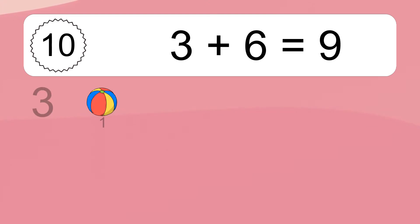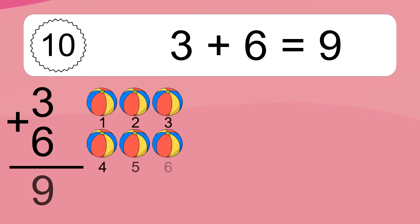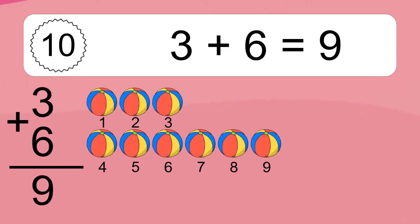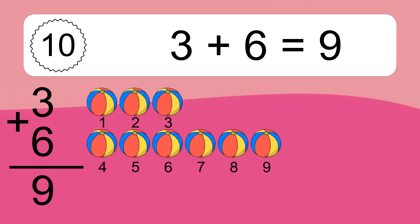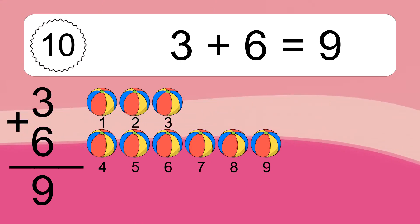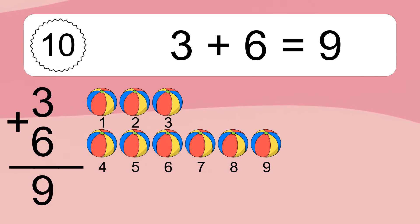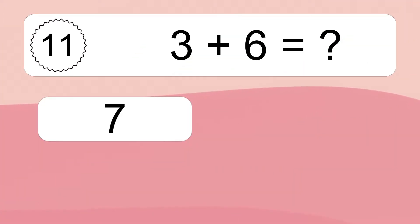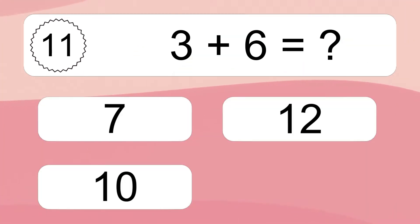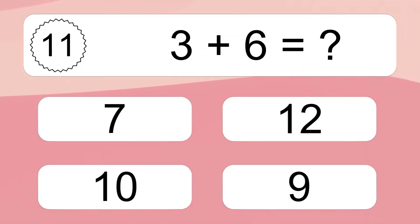3 plus 6 equals what? 3 plus 6 equals 9. Let's count it. 1, 2, 3, 4, 5, 6, 7, 8, 9.